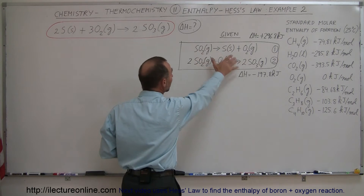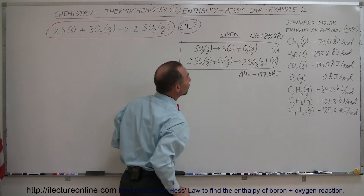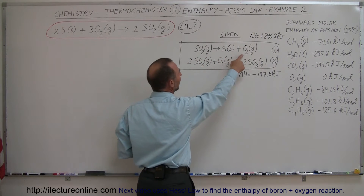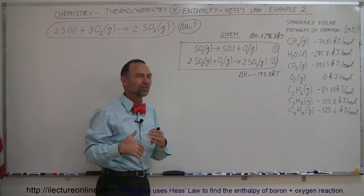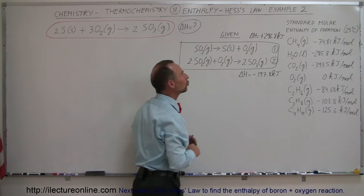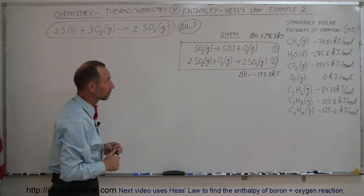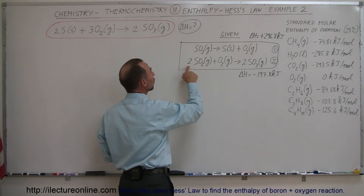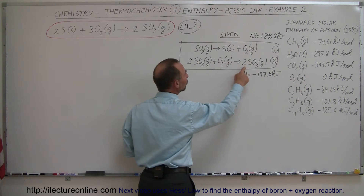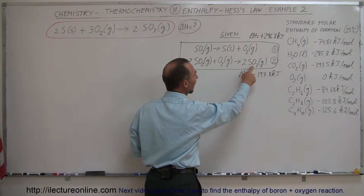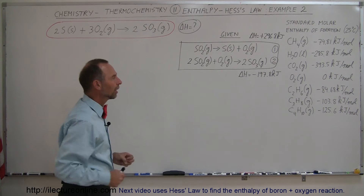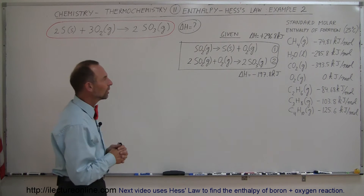We have two equations that involve sulfur and oxygen that give us enthalpy changes. The first one is: sulfur dioxide gives solid sulfur and oxygen gas — that's not a reaction that works on its own; you need 296.8 kilojoules of energy to make it work. On the other hand, we have two moles of sulfur dioxide gas plus oxygen gas reacting to give two moles of sulfur trioxide gas, and that is an exothermic reaction — it gives off 197.8 kilojoules.